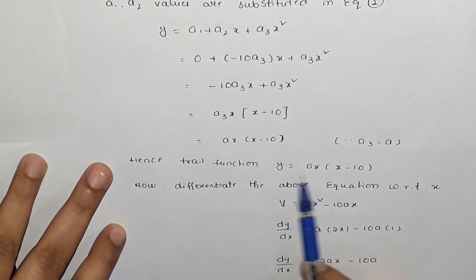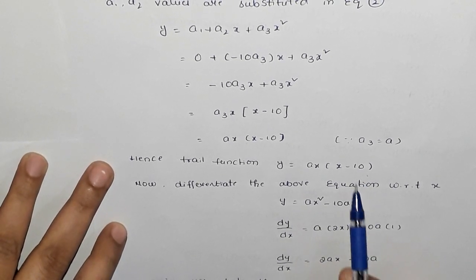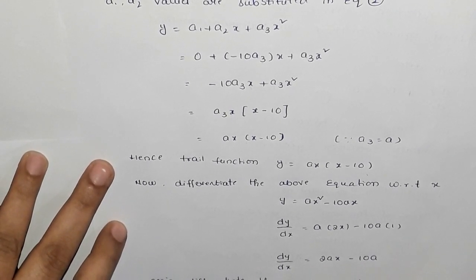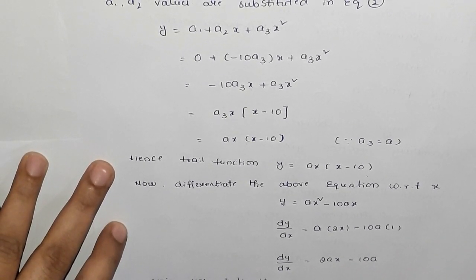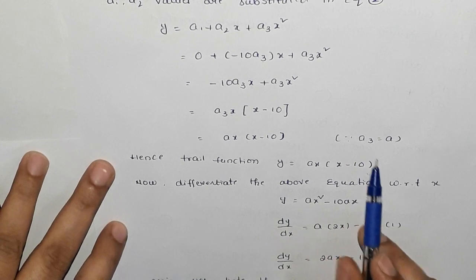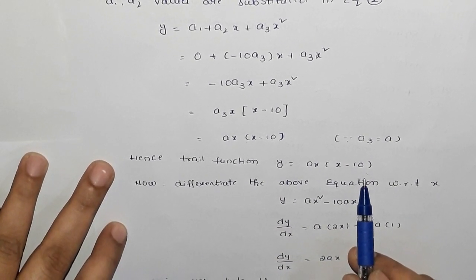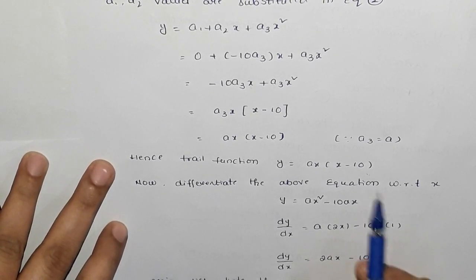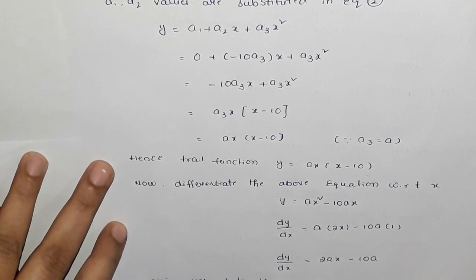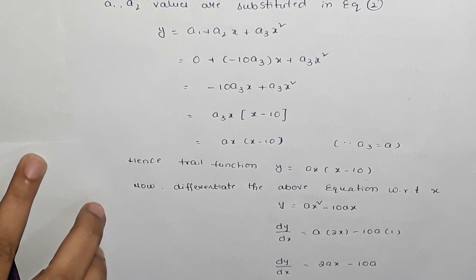So the trial function is y = ax(x − 10). We take this trial function, apply the boundary conditions, and verify it satisfies them. The weighted residual function is then formulated. Using this, all four methods will be applied to solve the differential equation.